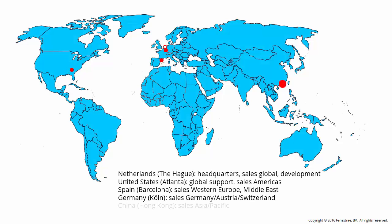Finestre is based in the Netherlands, in The Hague. Our development team and global sales are located there. Our other primary office is just outside Atlanta, Georgia in the United States — that's where my office is located. From here, we handle global technical support and sales for the Americas. We also have satellite offices in Spain, Germany, and China.